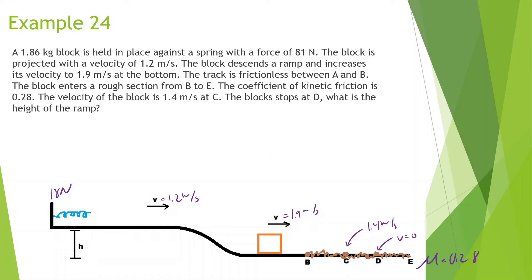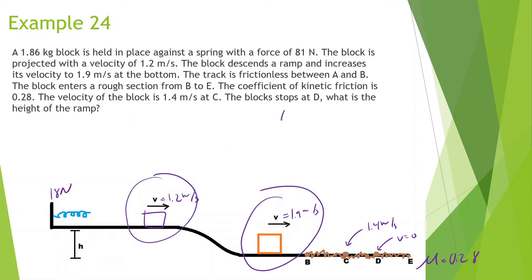What is the height of the ramp? There's a lot of information here, but we really just want to look at two points — before it goes down the hill and after it goes down the hill. So mechanical energy initial equals mechanical energy final. At the very beginning we have kinetic energy initial and gravitational potential energy initial. At the very end, putting the zero line at the bottom, we have kinetic energy final.